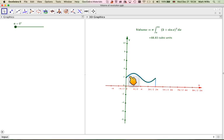So here we've got a function, and the function is 2 plus sine x between 0 and 2 pi. And what we're going to do, we're going to rotate this round the x-axis, and I'm going to illustrate this.